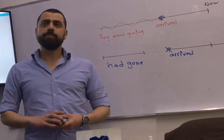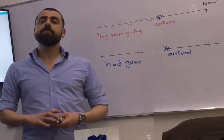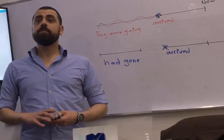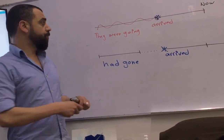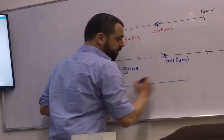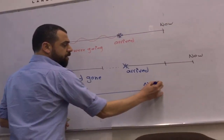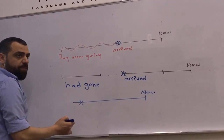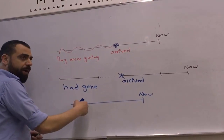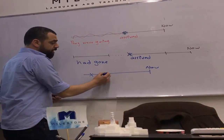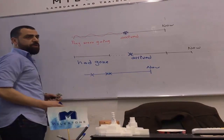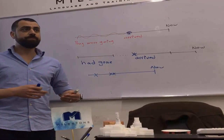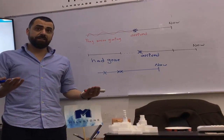My nephew had broken his arm, so I got him to the hospital. If we put a timeline — this is now — his nephew had broken his arm, then Abud saw him, and when he saw him he took him to the hospital. So if we have many actions happening one after another, what do we use? Past simple.